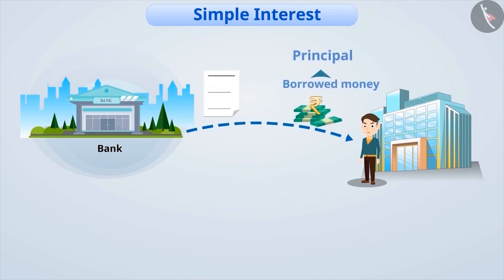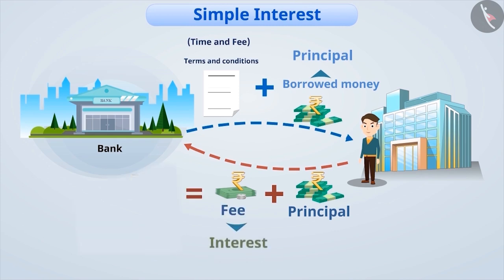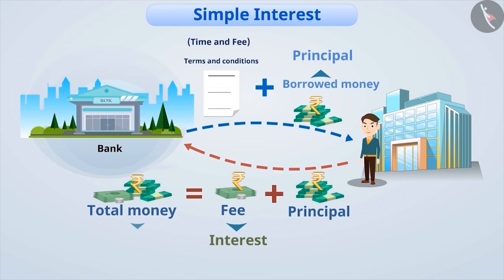Before borrowing, some terms and conditions like time and fee are set between the borrower and the lender. The person uses the money borrowed for a fixed period of time. When the borrower returns the principal amount, he needs to pay a fee for the time period for which he has borrowed the money. This fee returned along with the principal is called the interest. On adding the interest and the principal, we calculate the total money which needs to be returned — this money is known as the amount. The return period and total interest are mentioned in the terms and conditions.